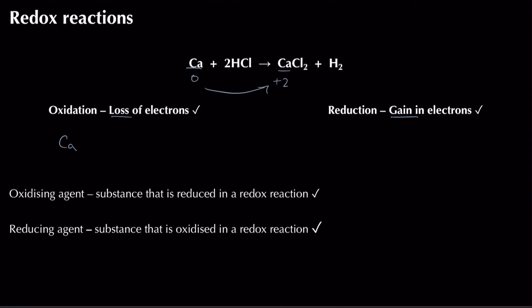Looking at hydrogen: on the left it has an oxidation state of plus one, whereas on the right, combined with an identical element in hydrogen gas, it has an oxidation state of zero. That number is getting more negative, so we know hydrogen is being reduced.